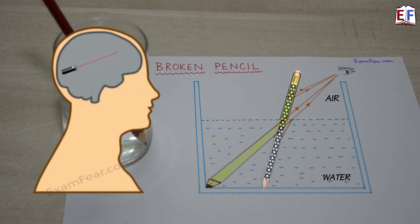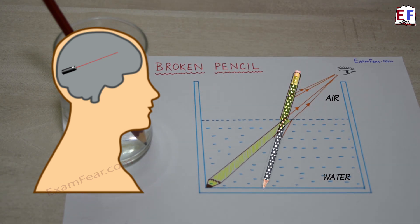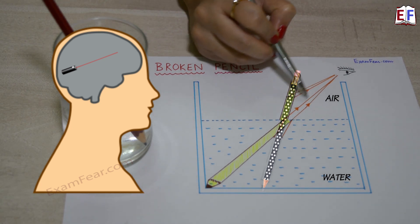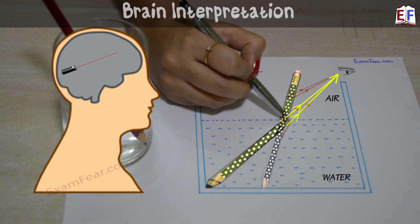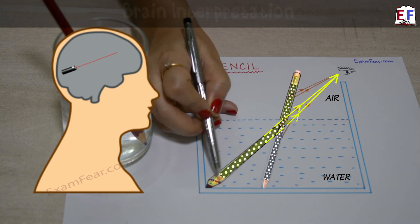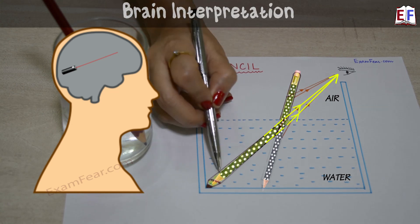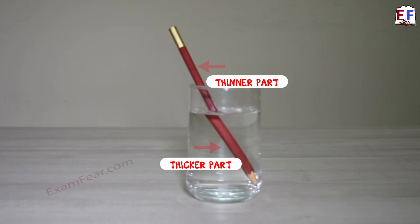Now, how do we see things? We see things based on what our brain interprets. Our brain understands one simple fact: whichever rays reach our eye, they must be coming straight. So for our brain, these are the two rays which are reaching our eyes, and the brain assumes the object must be somewhere here. That is why if you extrapolate these two rays which reached our eyes, that is where we see the pencil — so instead of seeing the pencil here, we see it here.